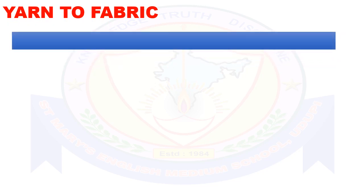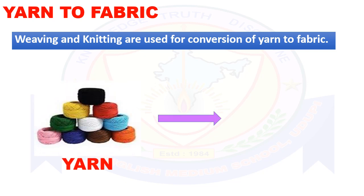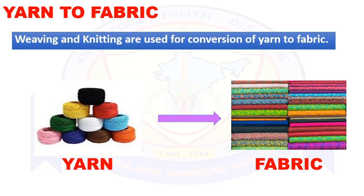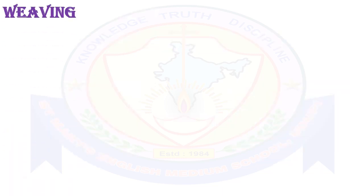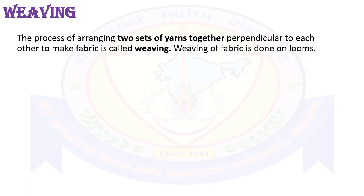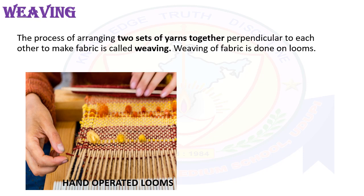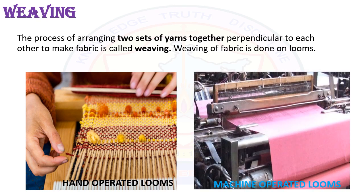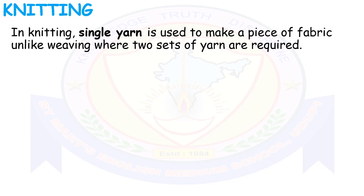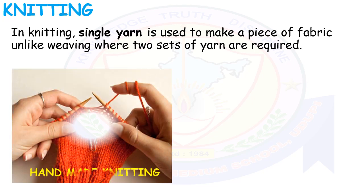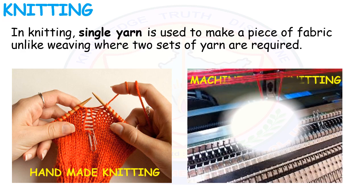Yarns are converted into fabric by weaving and knitting. Weaving is the process of arranging two sets of yarns together perpendicular to each other to make fabric. Weaving of fabric is done on looms, which are either hand-operated or machine-operated. In knitting, a single yarn is used to make a piece of fabric, unlike weaving where two sets of yarn are required. Knitting is done by hand and also on machines.